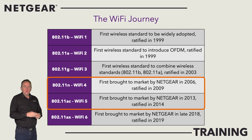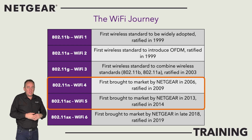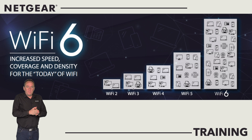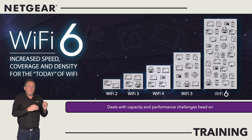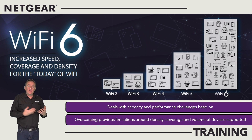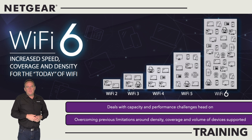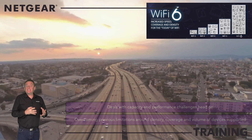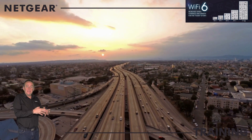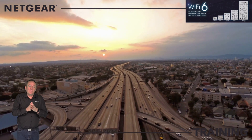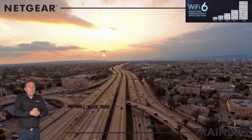Wi-Fi 4 and 5 have been utilized by Netgear since 2009, and in 2019 we introduced Wi-Fi 6. More than being just faster than its predecessors, Wi-Fi 6 deals with capacity and performance challenges head-on, overcoming previous limitations around density, coverage, and the volume of devices which can be supported. It even helps save on battery life for many devices using Wi-Fi. It has been compared to leaving a congested narrow road and joining a multi-lane superhighway — Wi-Fi 6 is one of those things that until you have it, you may not know how much it was needed.